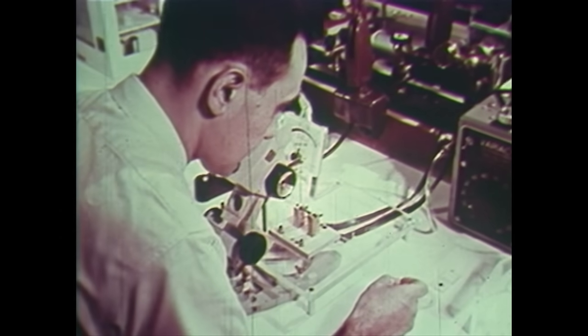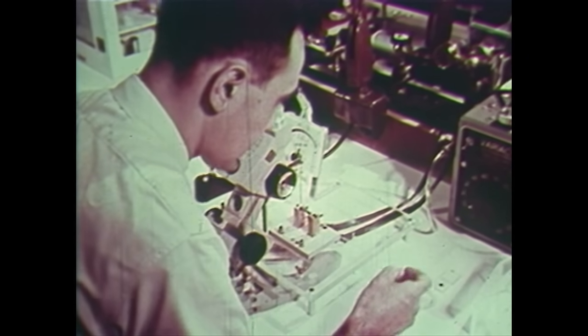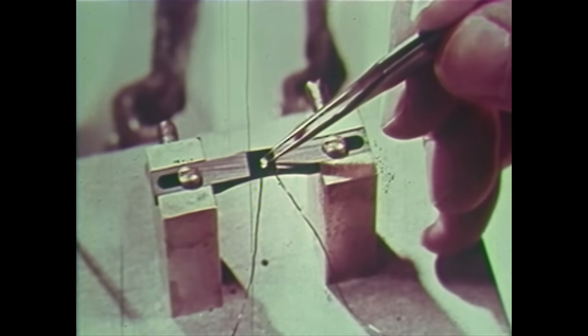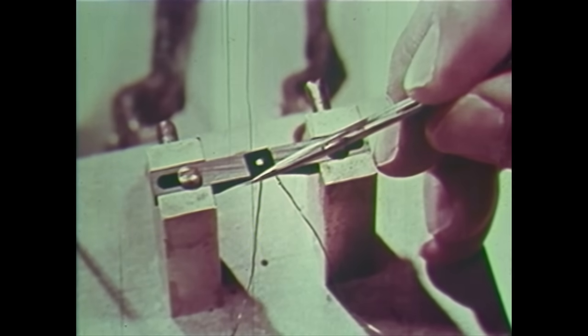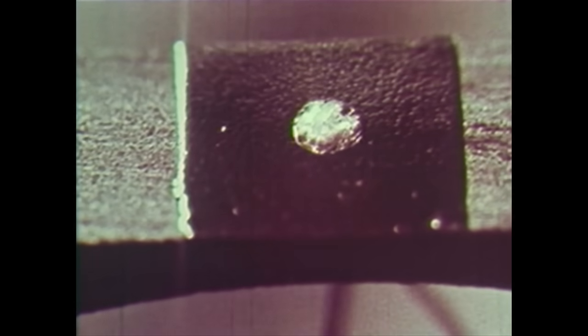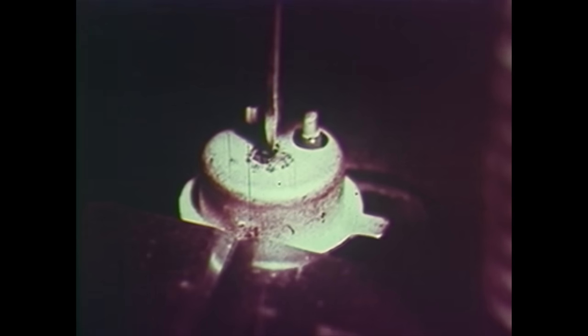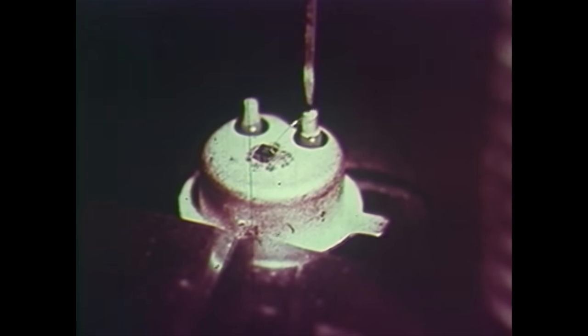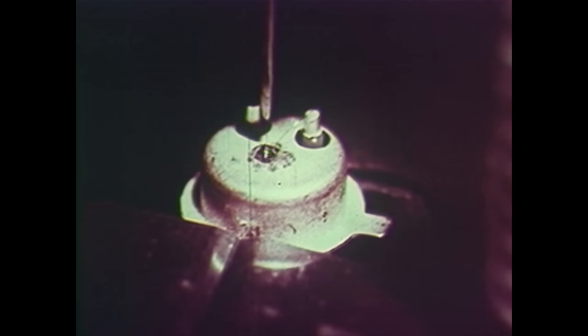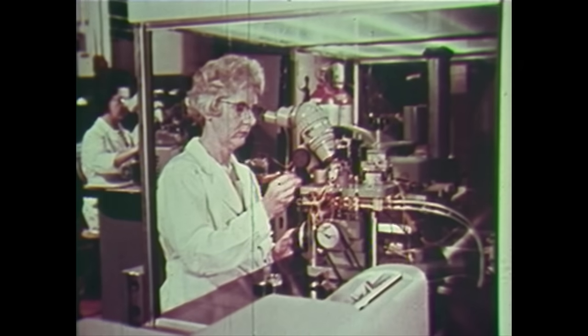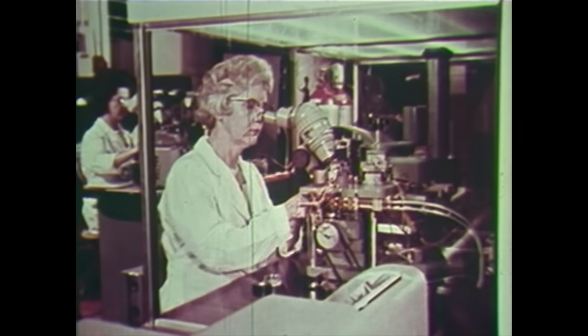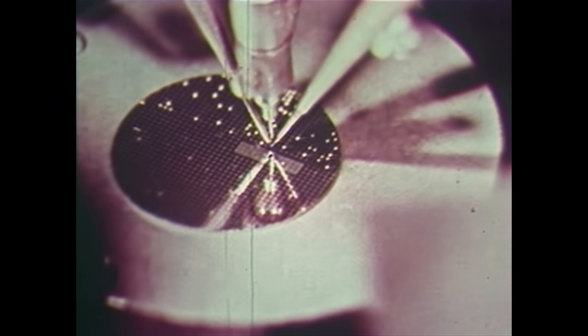The frequency of the alloy transistor was definitely limited, and it could only be produced on a one-at-a-time basis. Now came another breakthrough: the diffused base transistor, which is a high-frequency, high-speed device. Working together, the development and manufacturing groups developed today's production methods. Now a single slice of silicon may contain as many as 2,000 transistors.